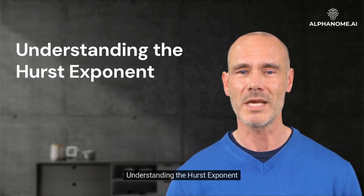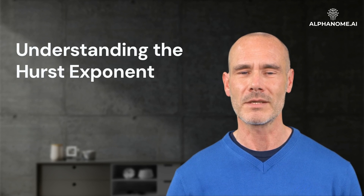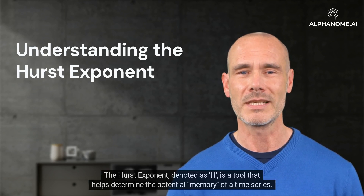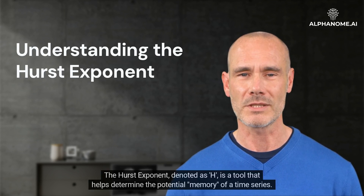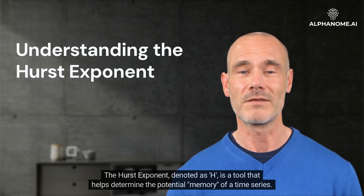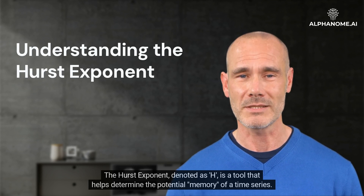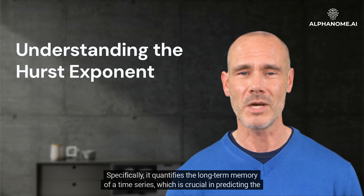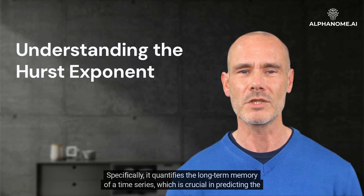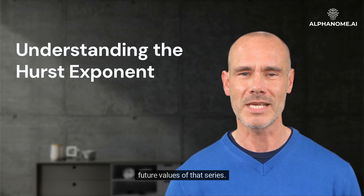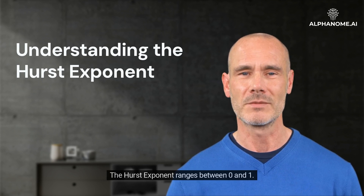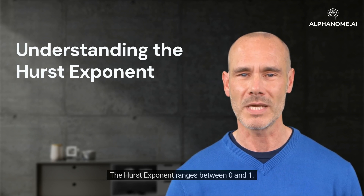The Hurst Exponent, denoted as H, is a tool that helps determine the potential memory of a time series. Specifically, it quantifies the long-term memory of a time series, which is crucial in predicting future values of that series. The Hurst Exponent ranges between 0 and 1.